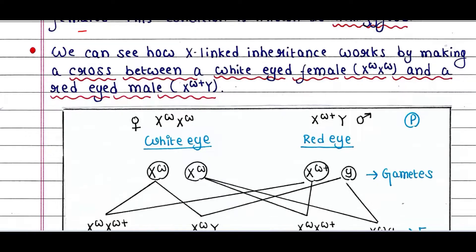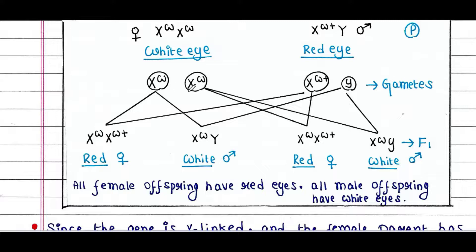We can see how X-linked inheritance works by making a cross between a white-eyed female and a red-eyed male. The white-eyed female has the genotype XwXw and the red-eyed male has the genotype Xw+Y. Two identical gametes are formed from the female fly — Xw — and two different gametes are formed from the male fly — Xw+ and Y.